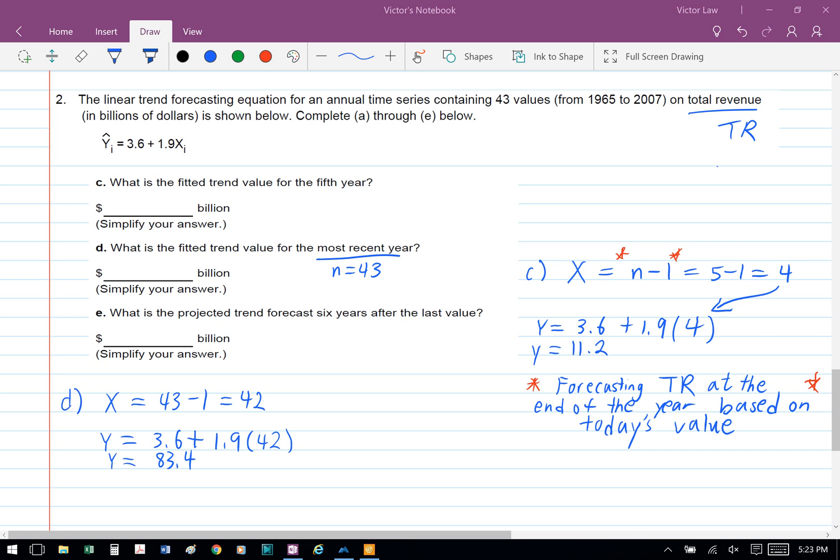In Part D, we're asked to find the fitted trend value for the most recent year. The most recent year is the last year, so n equals 43. We plug that into the formula x equals n minus 1, so we have 43 minus 1, which gives us x equals 42. Then we plug it into the total revenue function: y equals 3.6 plus 1.9 times 42, so y equals 83.4.